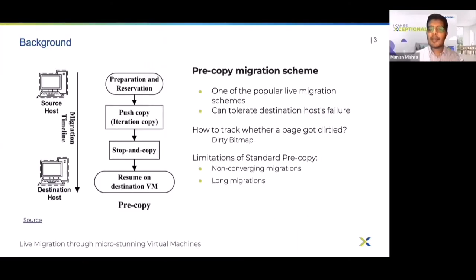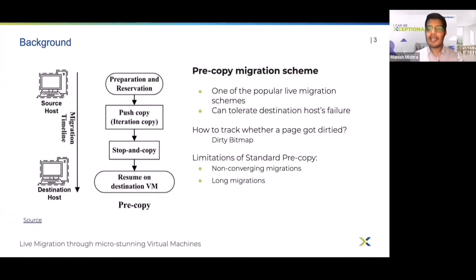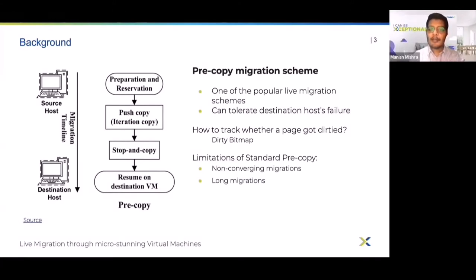Our micro-stun based algorithm improves pre-copy live migrations. Pre-copy live migration can recover a VM on the source even in case of network failure or destination host failure, which is why it is the most popular scheme for live migrating VMs.